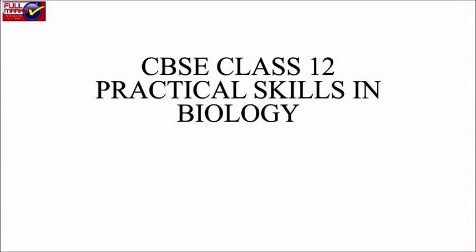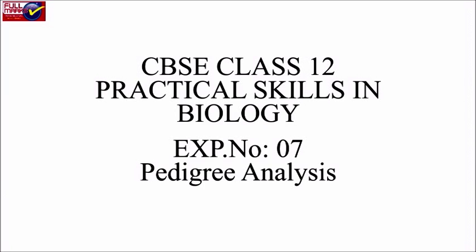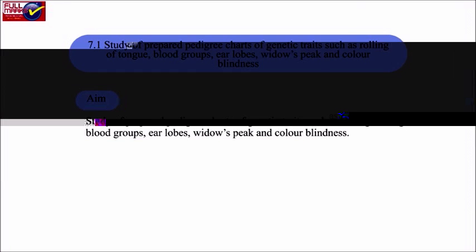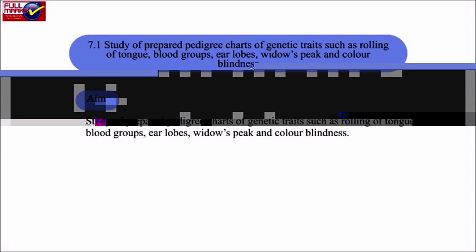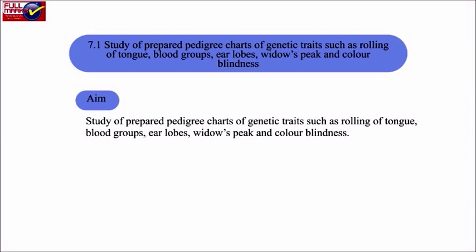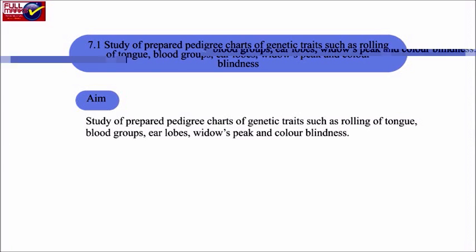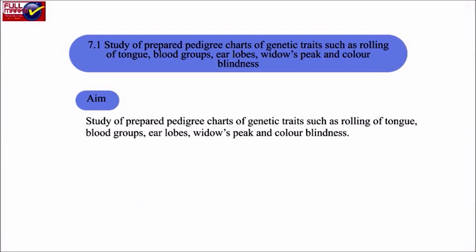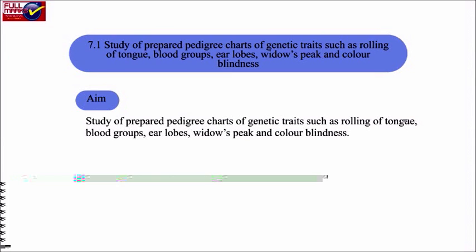CSC Lab 12: Practical Skills in Biology. Experiment No. 7 - Pedigree Analysis. Study of prepared pedigree charts of genetic traits such as rolling of tongue, blood groups, earlobes, widow's peak, and color blindness.